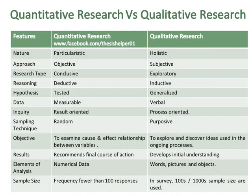The nature of quantitative research is particularistic while the nature of qualitative research is holistic. The approach of quantitative research is objective while the approach of qualitative research is subjective. The research type of quantitative research is conclusive while the research type of qualitative research is exploratory. The reasoning of quantitative research is deductive while the reasoning of qualitative research is inductive.